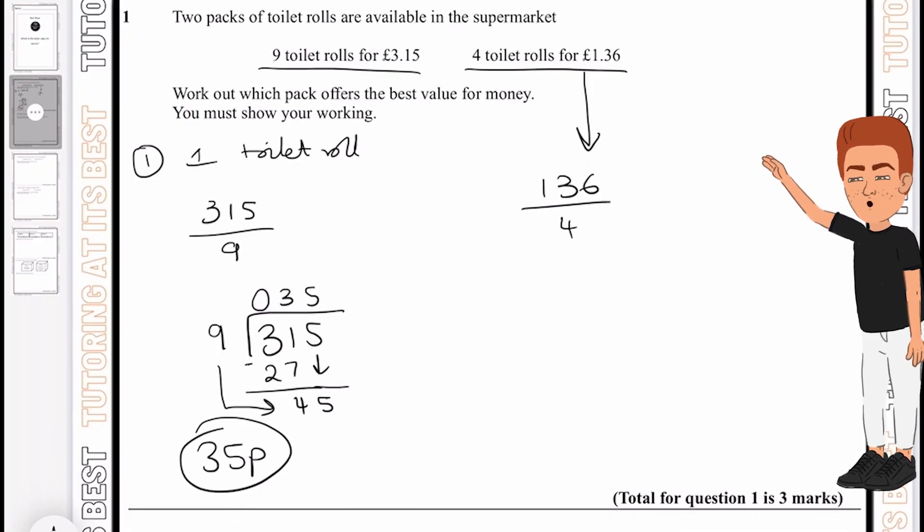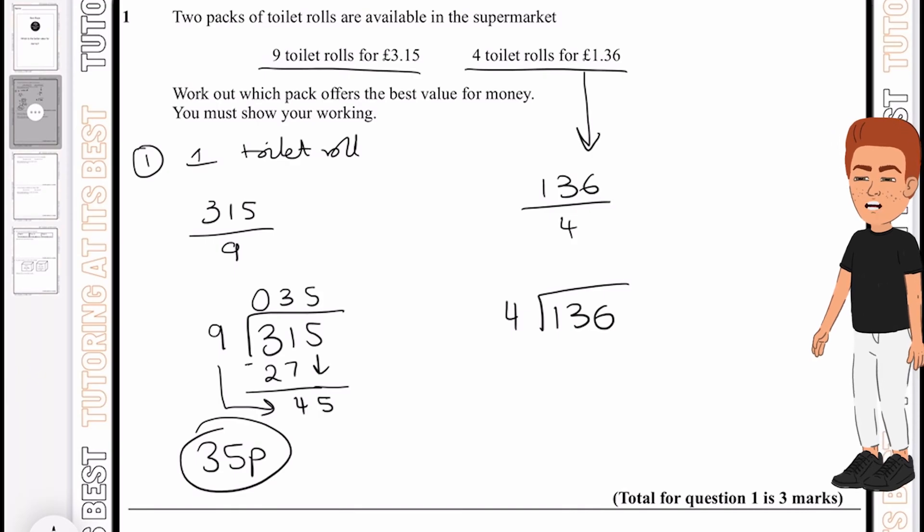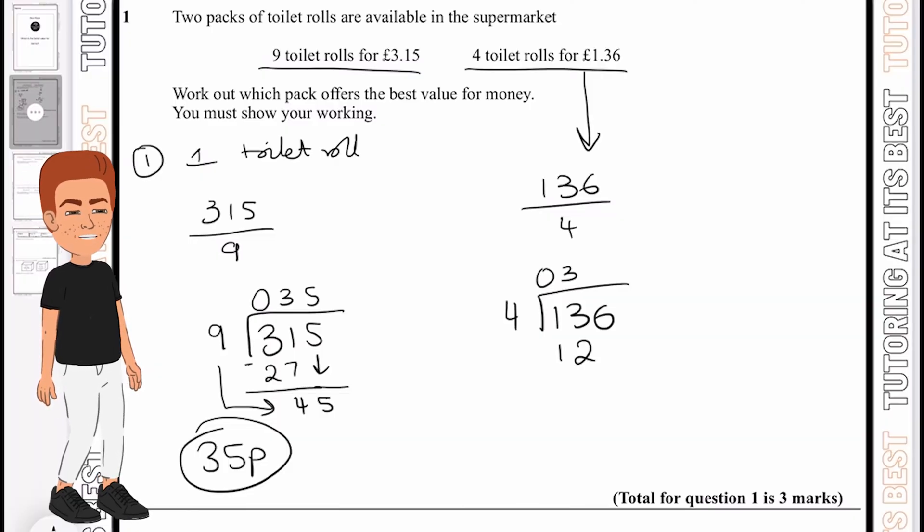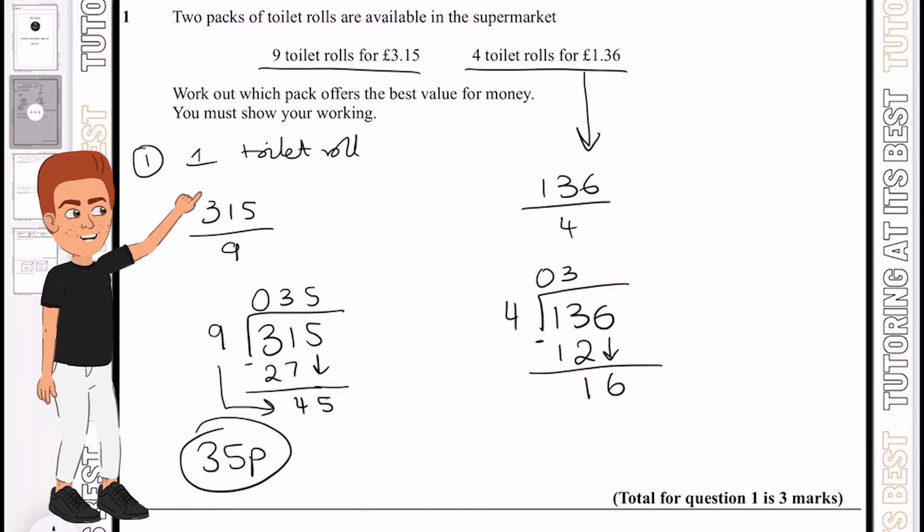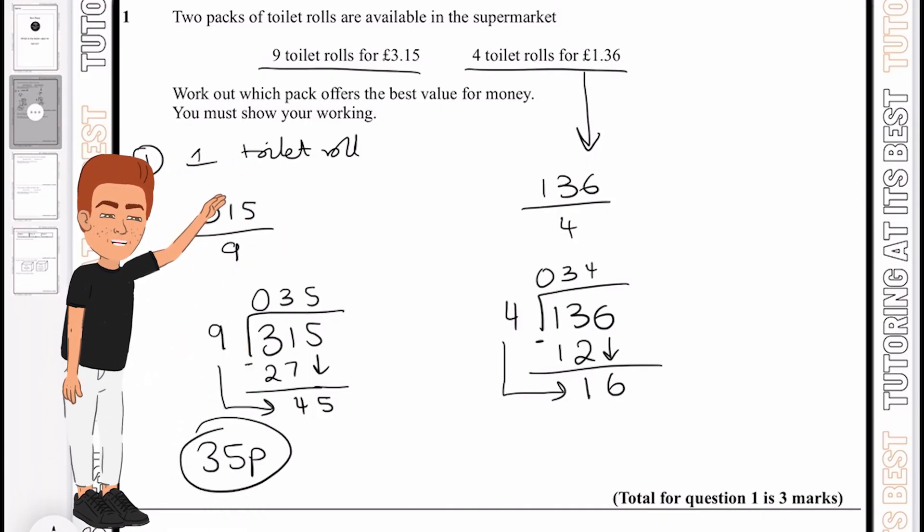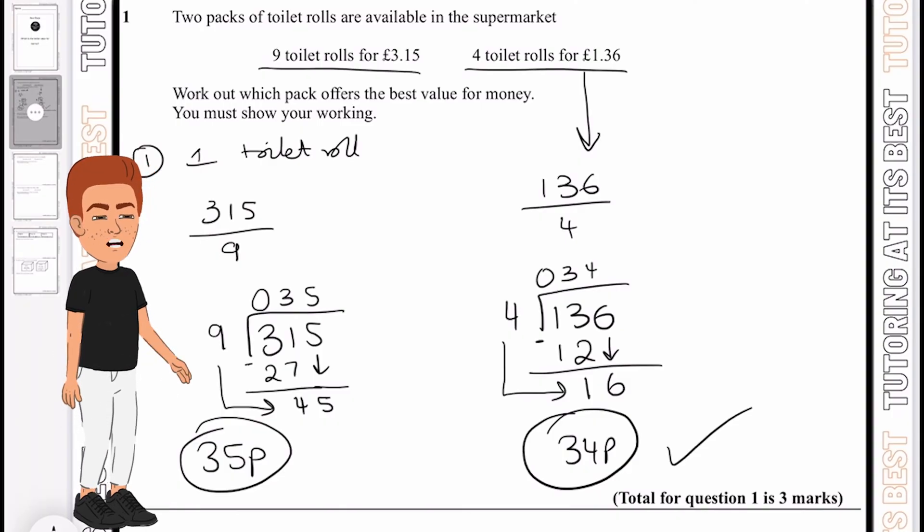So one toilet roll on the basis of 9 for £3.15 is 35 pence. Now for four toilet rolls, we have 136 divided by 4. 4 doesn't go into 1 so we place a 0, but 4 goes into 13 three times. Place that below, subtract and get 1 as remainder. Bring down the 6 to become 16. 4 goes into 16 four times, which means one toilet roll will be 34 pence. So that is best value.